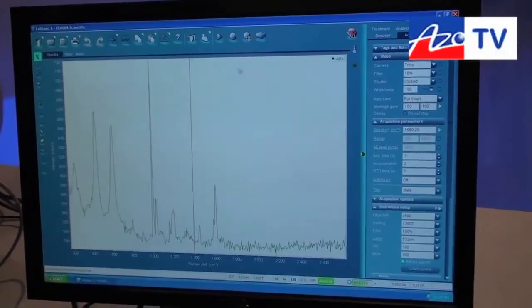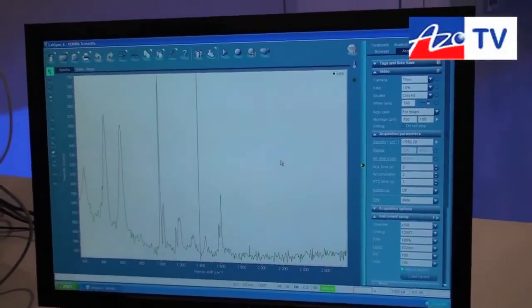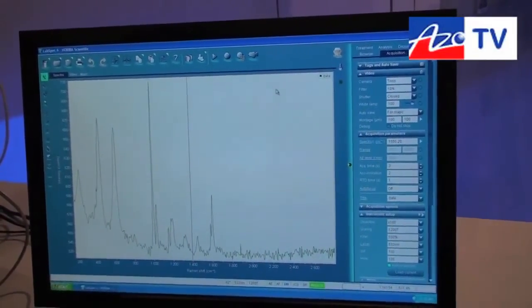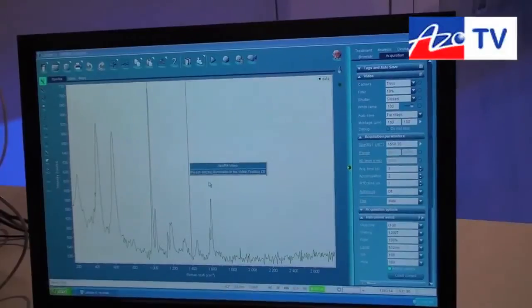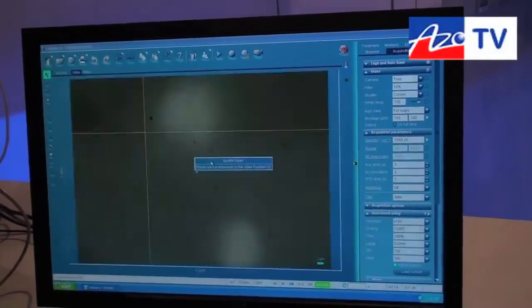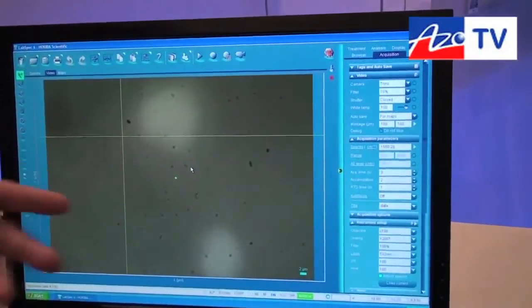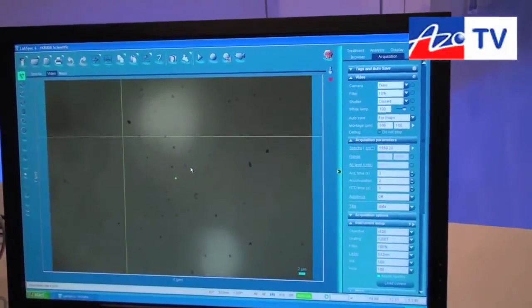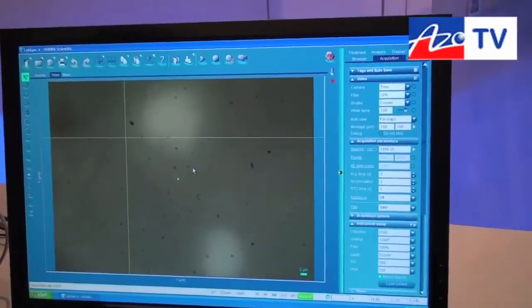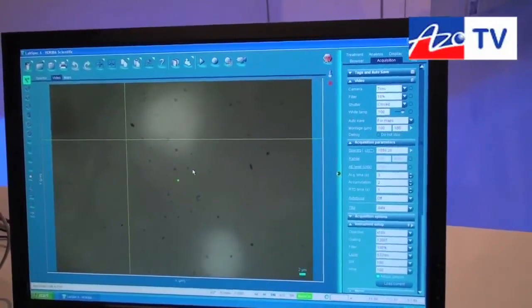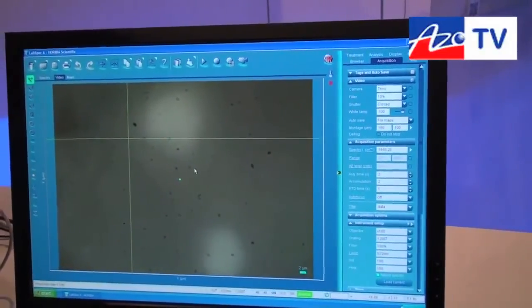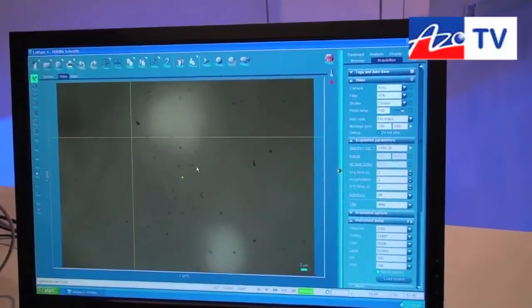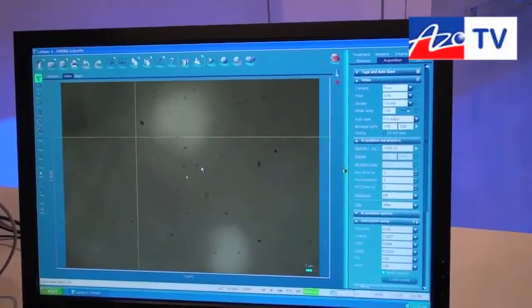Now I'm going to stop and go back to the video mode to see that we have these white features here, which are actually titanium dioxide inside the system. This is to illustrate the confocality of this Raman microscope system. We are measuring in depth and we are seeing what's actually inside the sample and not only on the surface.